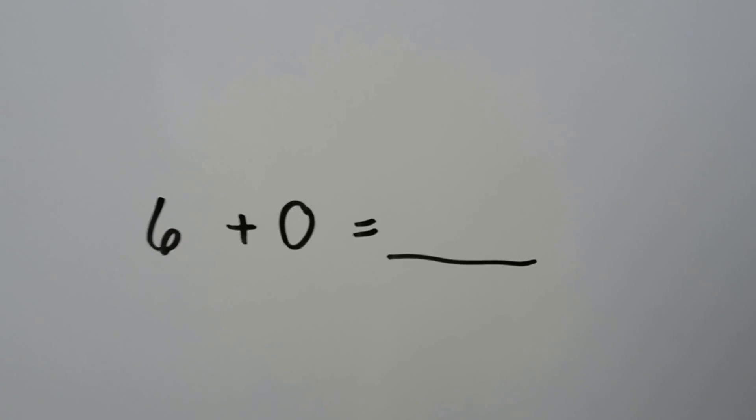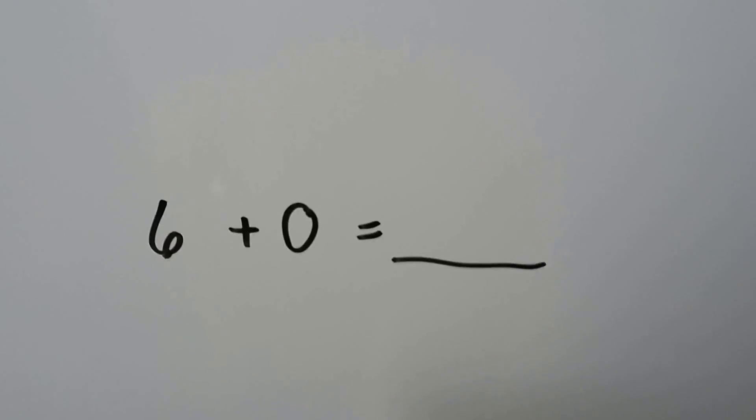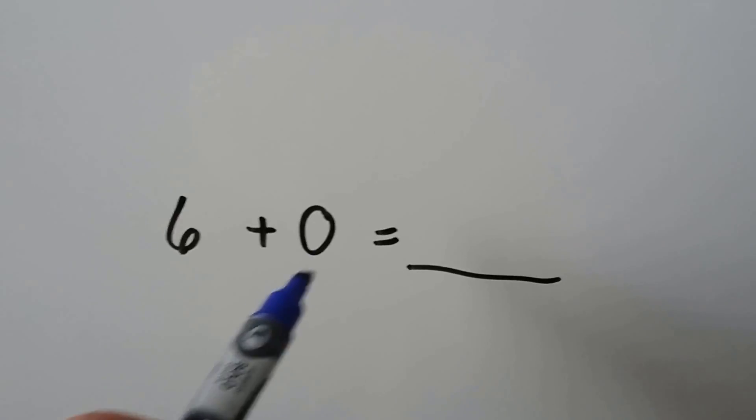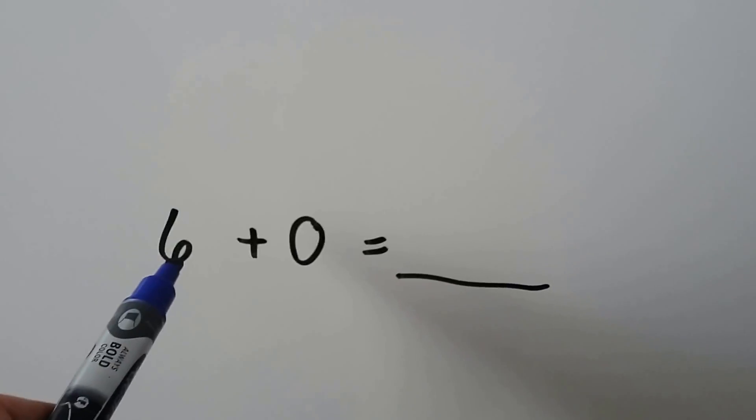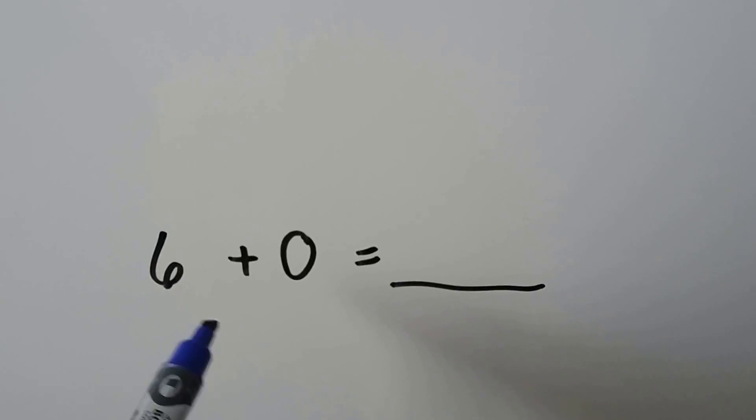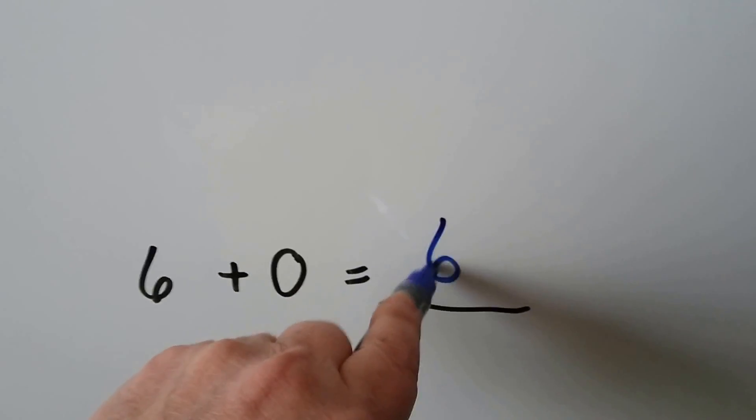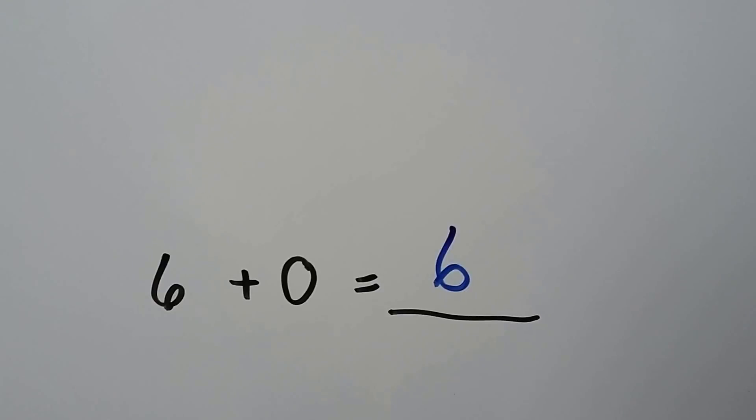Six plus zero. Whenever we add zero to a number, the number stays the same. The answer is six.